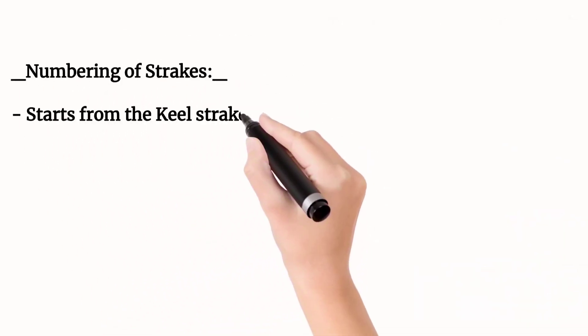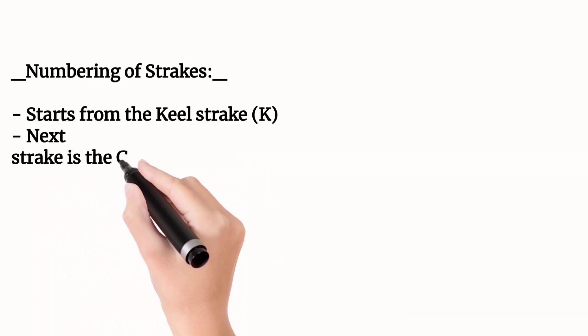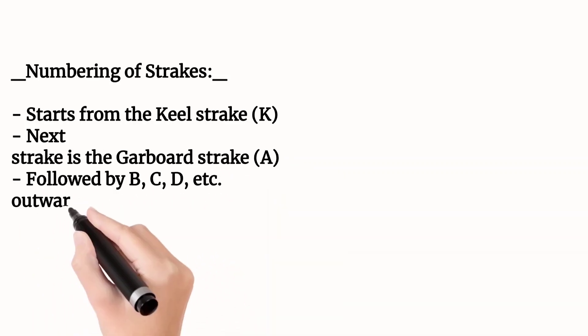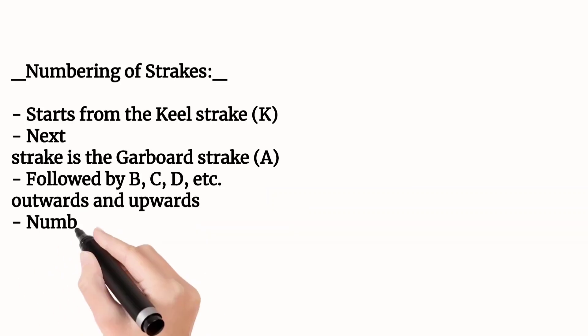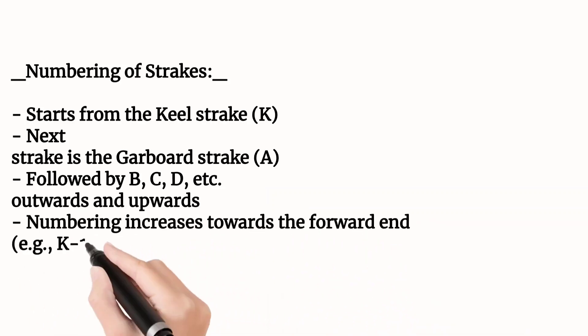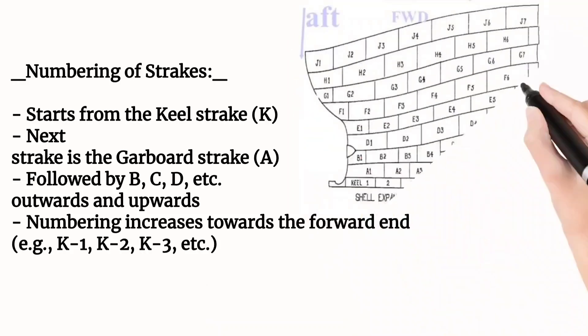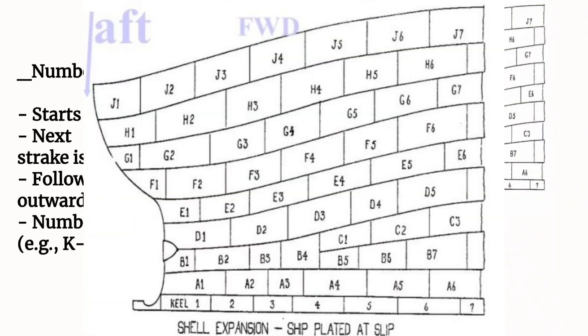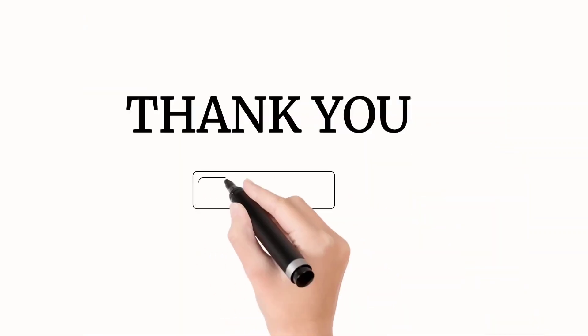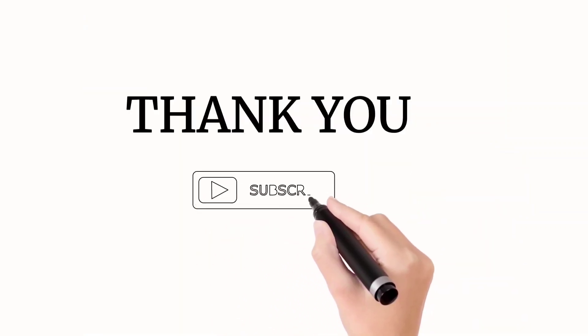Now we will see the numbering of streaks. It starts from the keel streak, that is K. Next streak is the garboard streak, that is A, followed by B, C, D, etc., outwards and upwards. Numbering increases towards the forward end. Example: K1, K2, K3, as you can see in this picture. This much is important from this topic and I hope you have liked it. Thank you.